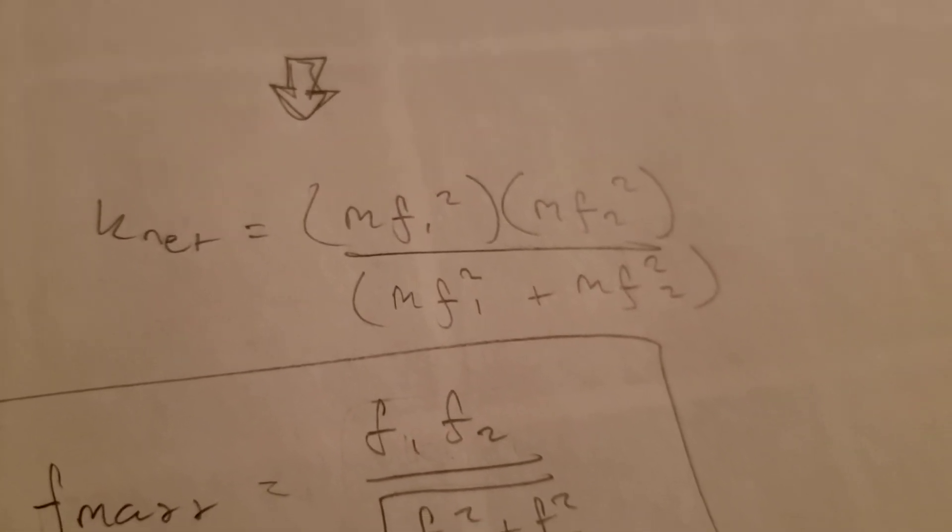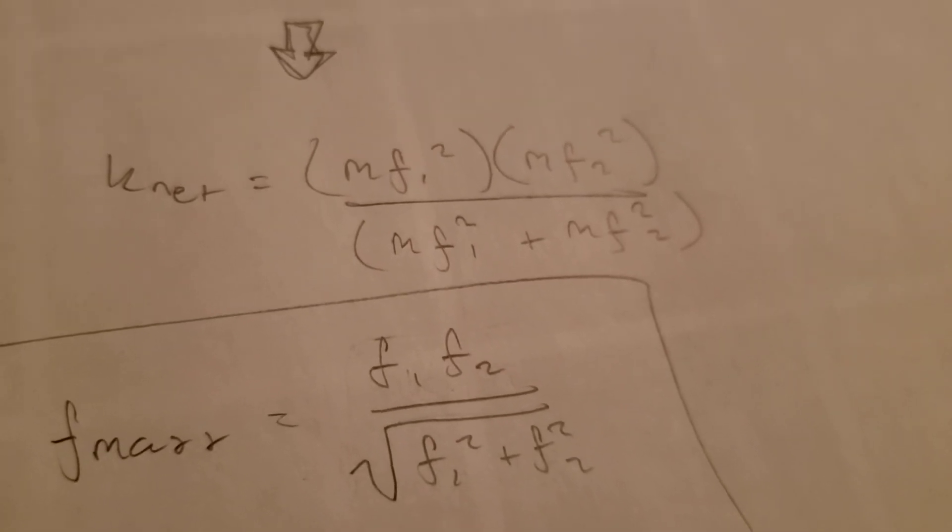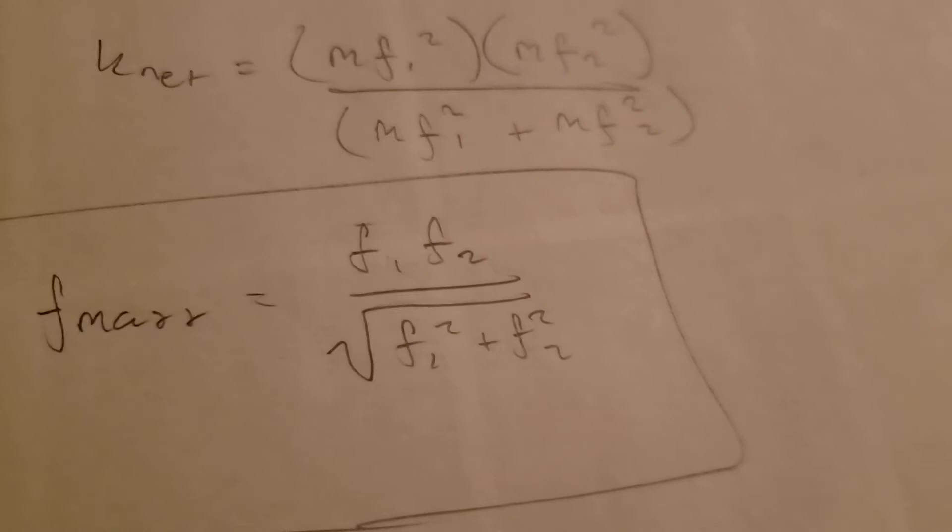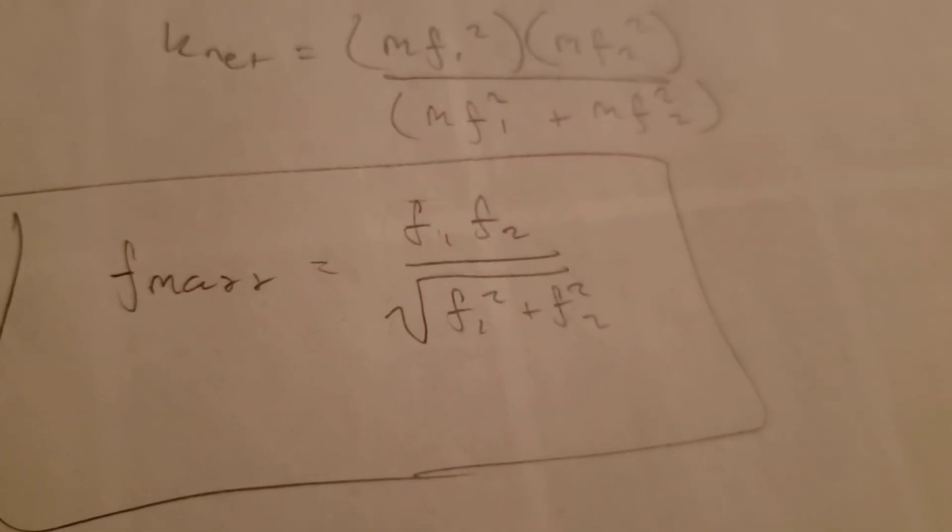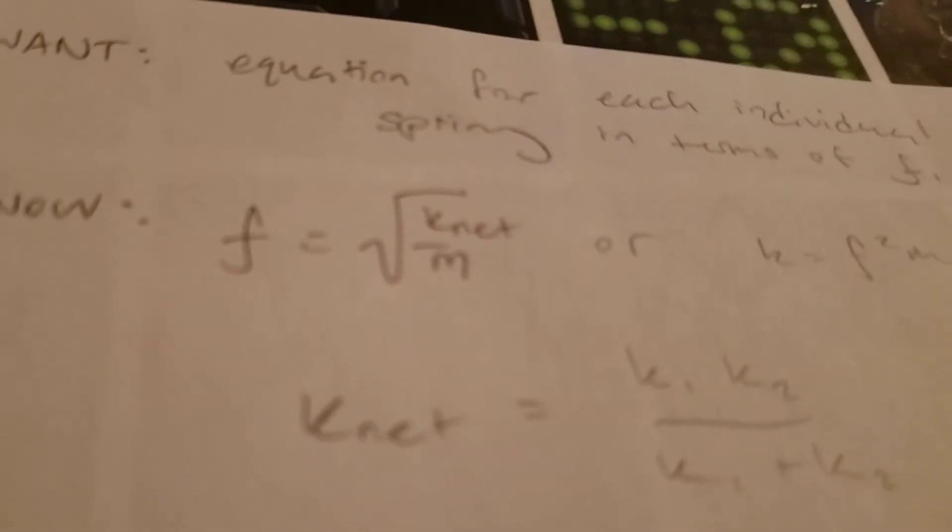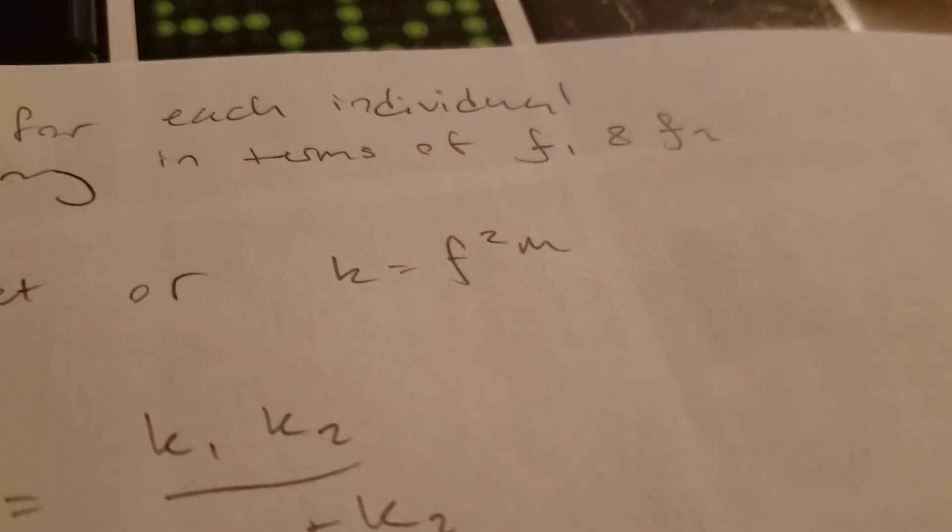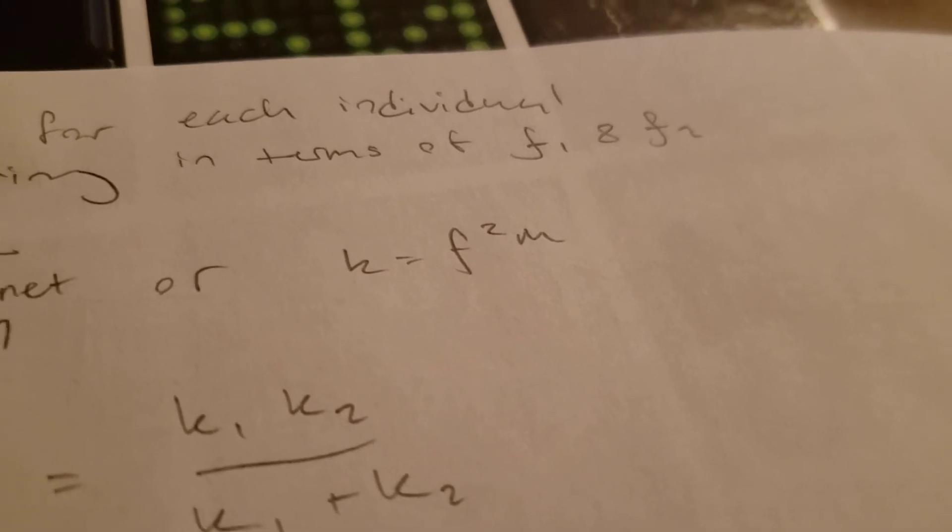So then from there, it's pretty much just algebra and rearranging to know that f_total is equal to f1 times f2 over the square root of f1 squared plus f2 squared. And we get that from substituting into this equation with this value for k_net and this identity up here.